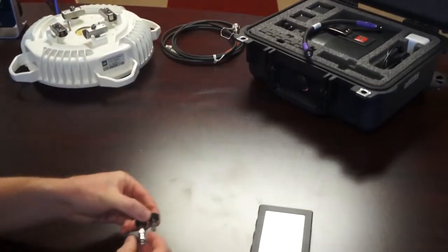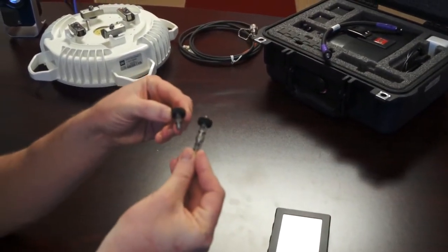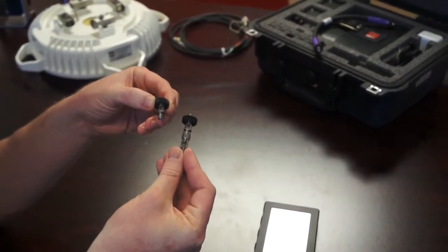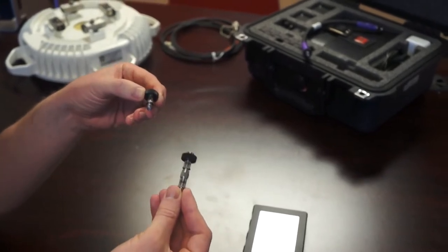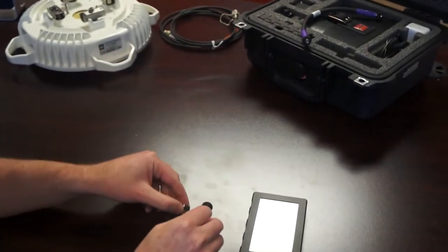So the first thing I'm going to do is pull out my attenuators from this kit. Now there's three 20 dB attenuators here to provide a total of 60 dB of attenuation. This will provide a signal to my Spectrum Compact that it can read and measure without damaging the unit itself.